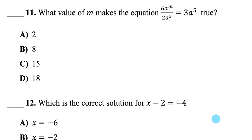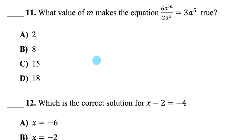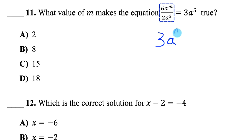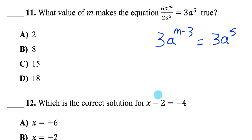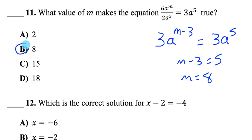Question 11: What value of m makes this equation true? On the left side I have 6 divided by 2, which is 3, and a power of a divided by a power of a — keep the base and subtract the exponents. I need that to equal 3a to the 5, so I need the exponent to become 5. What minus 3 equals 5? That's 8, so m equals 8.